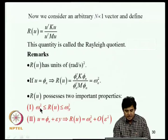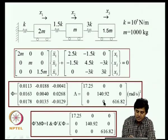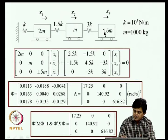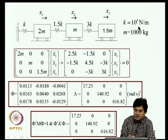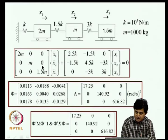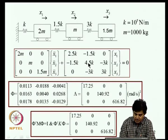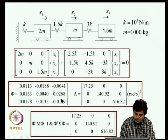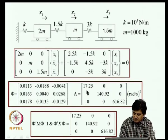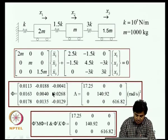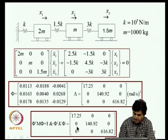For a 3-degree-of-freedom system with given parameters, one can write the mass and stiffness matrices and carry out eigenvalue analysis. The exact modal matrix and the diagonal matrix of squared natural frequencies are known. If a guess of U = [1, 1, 1]^T is used, the Rayleigh's quotient R(U) can be computed. Compared to the true first mode shape of approximately [1.13, 1.63, 1.78], the guess [1,1,1] is poor, but the Rayleigh's quotient remains bounded between the first and last natural frequency squares.